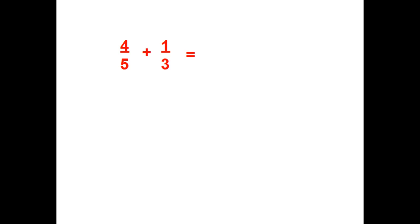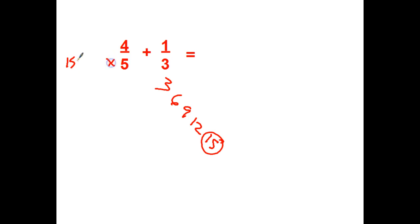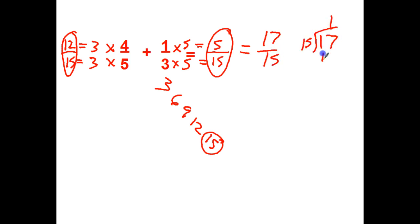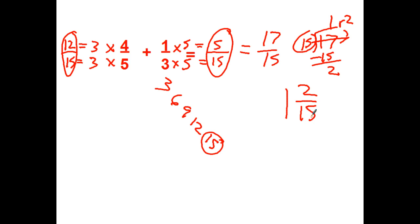Stop the video and you try this one out. 4 fifths plus 1 third. Again, you can't take 3 times something to get 5, so I'm looking for the LCM. Multiples of 5 end with 5s or 0. Going through multiples of 3: 3, 6, 9, 12, 15 — there's one that ends with 5. So I'm going for 5 times 3 and 3 times 5 to equal 15. 5 times 3, so 4 times 3 equals 12. 3 times 5 equals 15, so 1 times 5 equals 5. We've got 12 fifteenths plus 5 fifteenths equals 17 fifteenths. When I divide, it goes one time, remainder 2. So my answer is going to be 1 and 2 fifteenths. I can't simplify the fraction anymore because 2 is even and 15 is not.